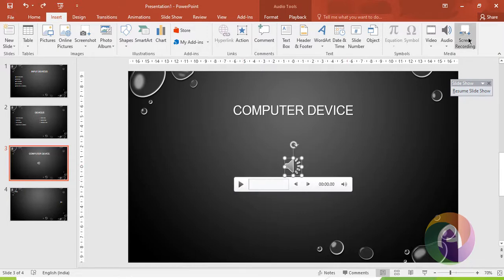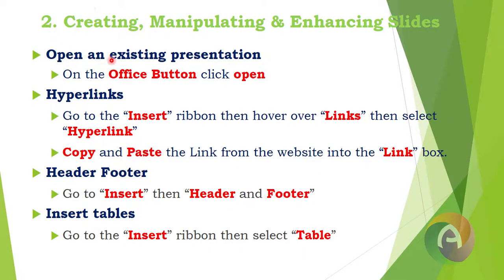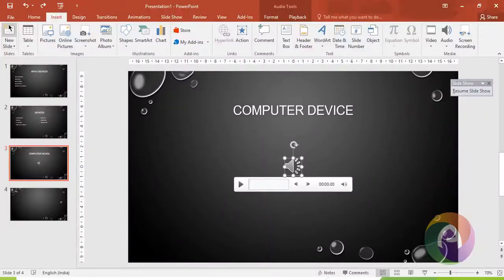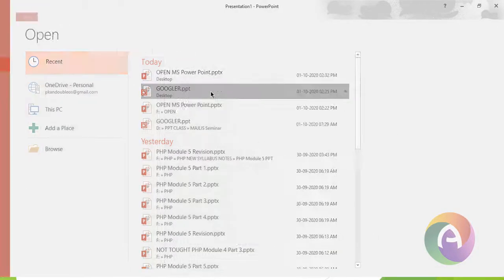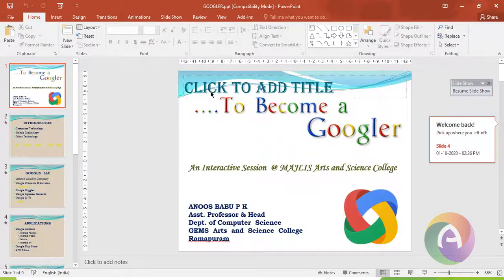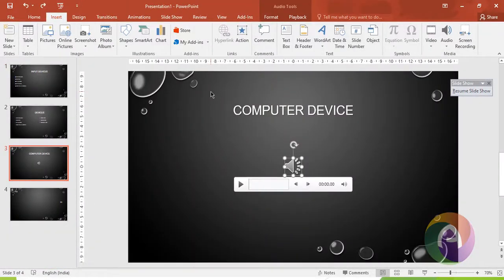Next is Screen Recording. The current screen can be recorded using the Screen Recording widget. To open an existing presentation, save the current presentation first, then click Open and browse to select your file.